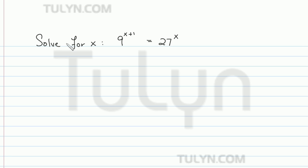So knowing that 3 squared is equal to 9 and 3 cubed is equal to 27, let's replace those values with the base 3 values in the original equation.